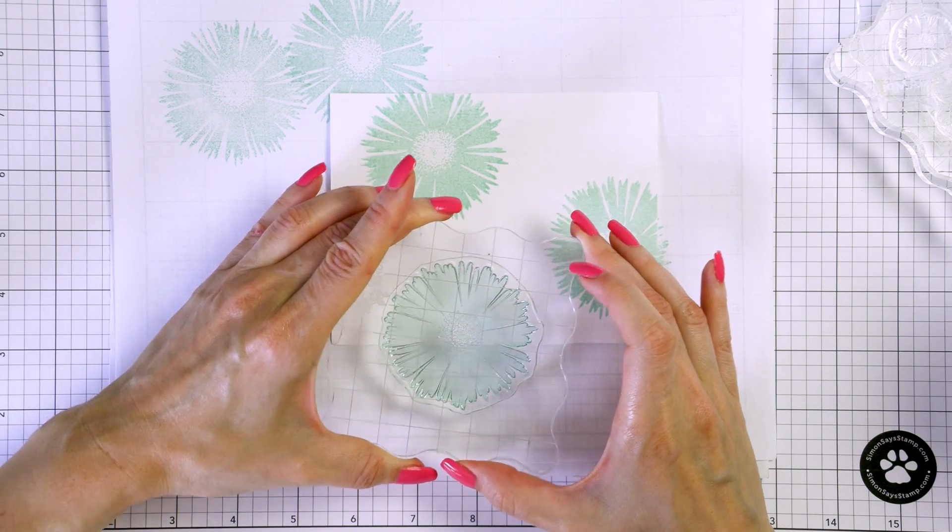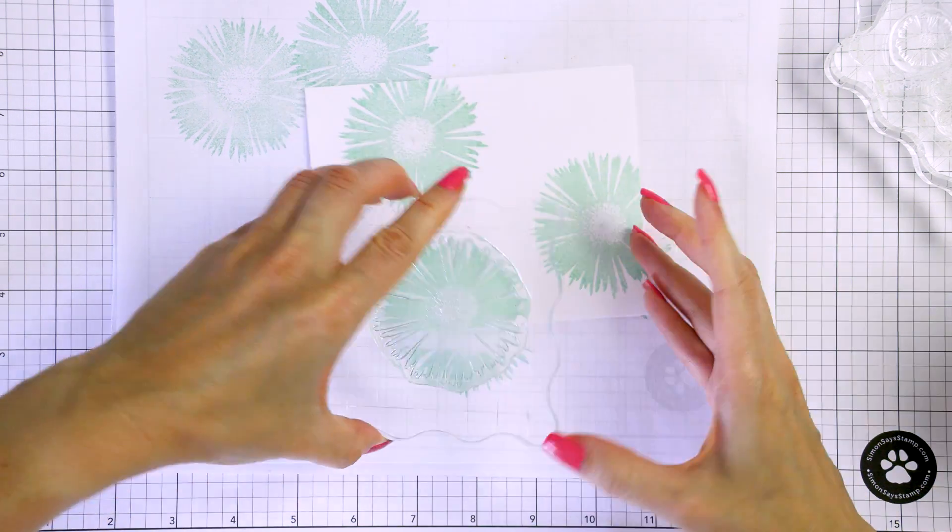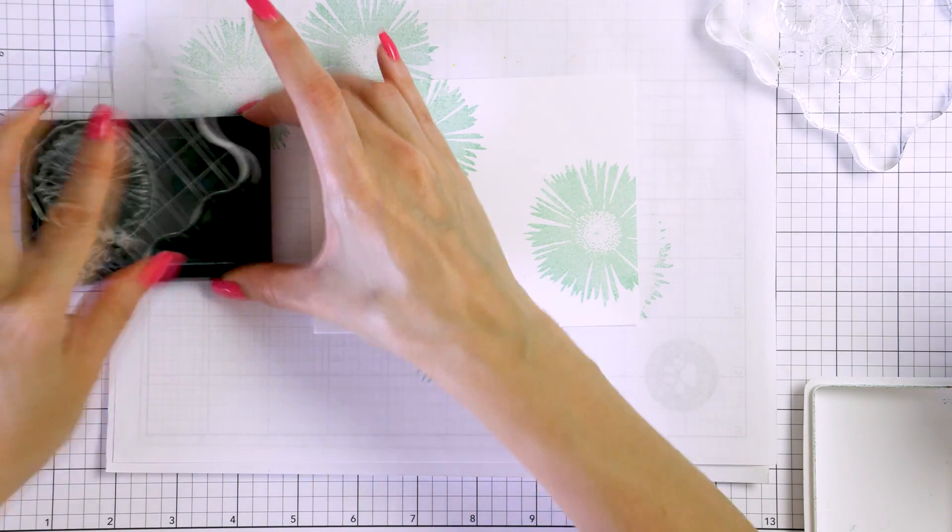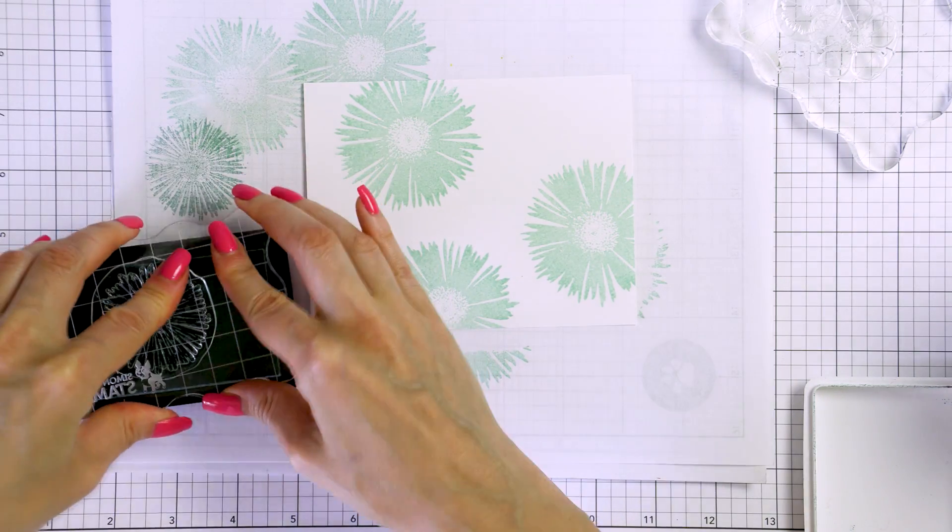When stamping patterns like this the only rule I follow is the rule of a triangle. I try to stamp my images in groups of three and when stamping them I try to form a triangle. This makes the pattern a lot more pleasing to the eye.